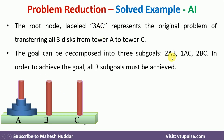First, we will move two blocks from A to B. Now two blocks are present on B and one block remains on A. We will then move that one block from A to C, so one block is on C and two blocks are on B. Finally, we will move these two blocks from B to C. This way we achieve moving all three blocks from A to C.